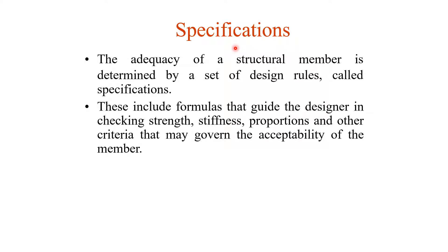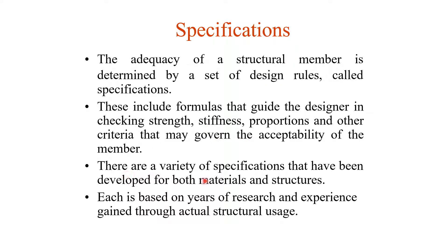For designing steel columns, steel beams, truss members, and girders, we need formulas from code guidelines based on long years of experience. The adequacy of a structural member is determined by a set of design rules called specifications. These include formulas that guide the designer in checking strength, stiffness, proportions, and other criteria governing the acceptability of the member.